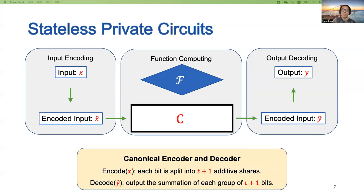To rule out trivial solutions in which the encoder or decoder computes the function f directly, we consider the canonical encoder and decoder by default. Concretely, the canonical encoder splits each input bit into T+1 additive shares, and the canonical decoder computes each bit by adding up a group of T+1 bits.